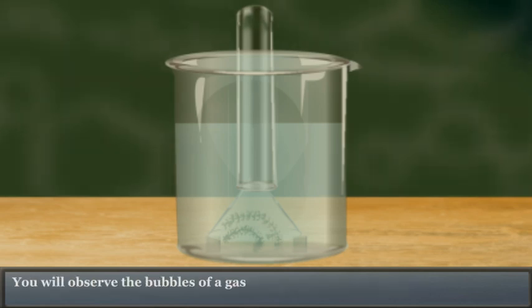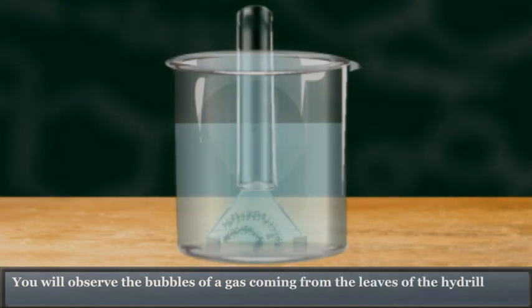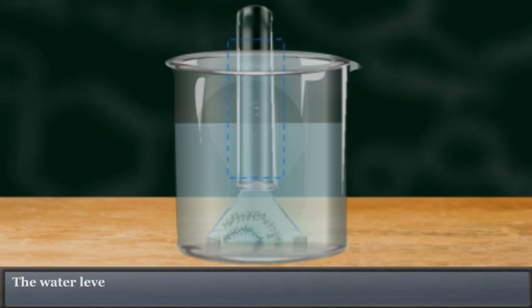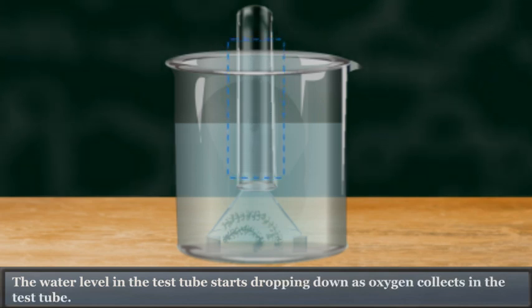You will observe the bubbles of a gas coming from the leaf of the Hydrilla plant. The water level in the test tube starts dropping down as oxygen collects in the test tube.